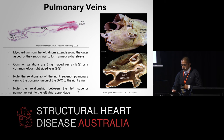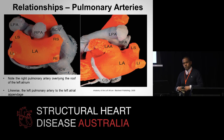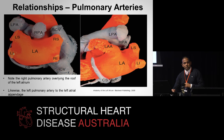We can also note the close relationship between the superior pulmonary vein and the left atrial appendage. Clinically, it is important to realise that the right pulmonary artery overlies the roof of the left atrium, so when placing catheters or devices in the left atrial appendage it's important to know where the pulmonary arteries run. Likewise, the left pulmonary artery has a close relationship to the left atrial appendage.